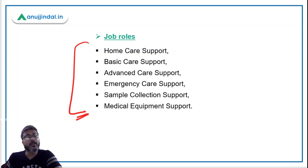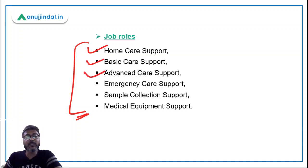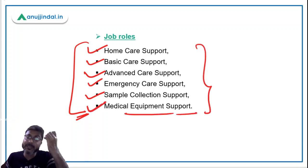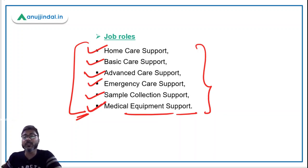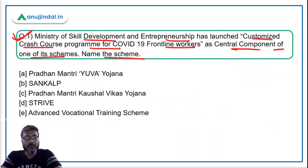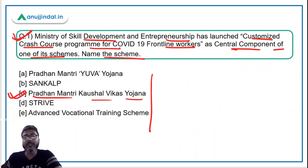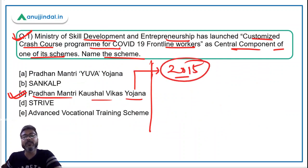The job roles under which training will be provided include: home care support, basic care support, advanced care support, emergency care support, sample collection support, and medical equipment support. All these kinds of support will be provided to these non-medical healthcare workers so that during emergency times they can provide medical services to patients. Therefore, the correct answer is Option C — Pradhan Mantri Kaushal Vikas Yojana.